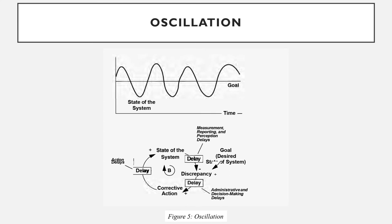The state of the system is compared to its own goal, and corrective action is taken to eliminate any discrepancies. Delays can exist in any of the causal links in a negative feedback loop. Oscillation can occur if there are delays in at least one of the links in a negative loop.